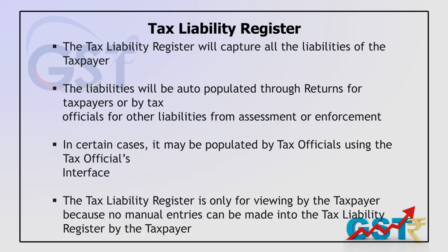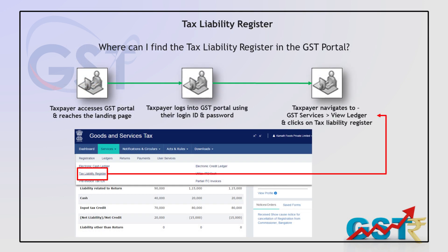The moment I upload GSTR1, a question arises: on the total sales or services that I, as a registered entity, have provided, I have a GST tax liability. This GST tax liability ultimately shifts into a ledger called the electronic liability ledger. I know how much supply I made during a particular month. By the 10th of the next month, I should upload GSTR1, and I know how much tax I need to pay on my output supply. This ledger, which is electronically and digitally maintained on the government's GST network portal, is called the electronic liability ledger.